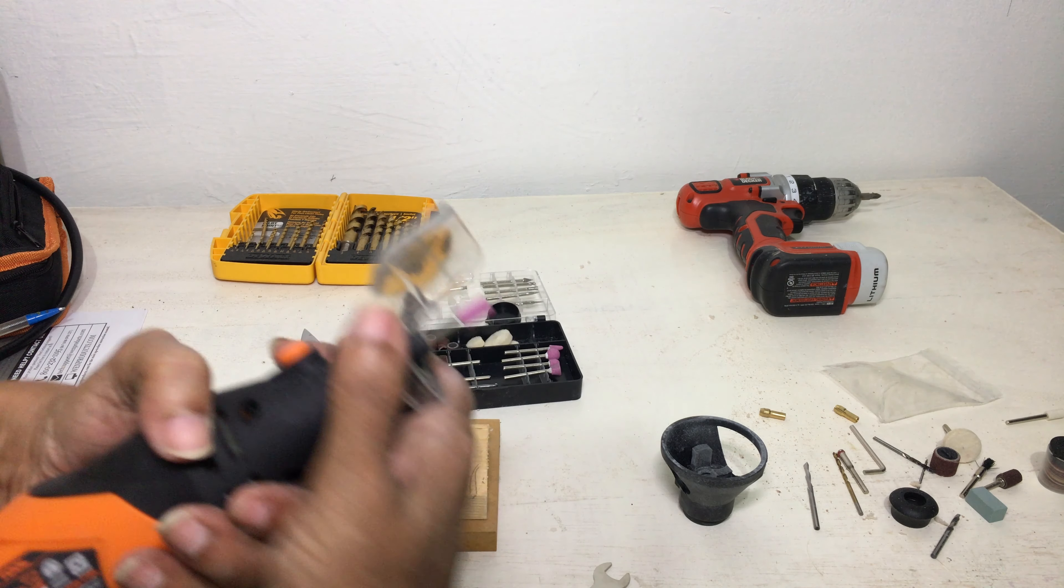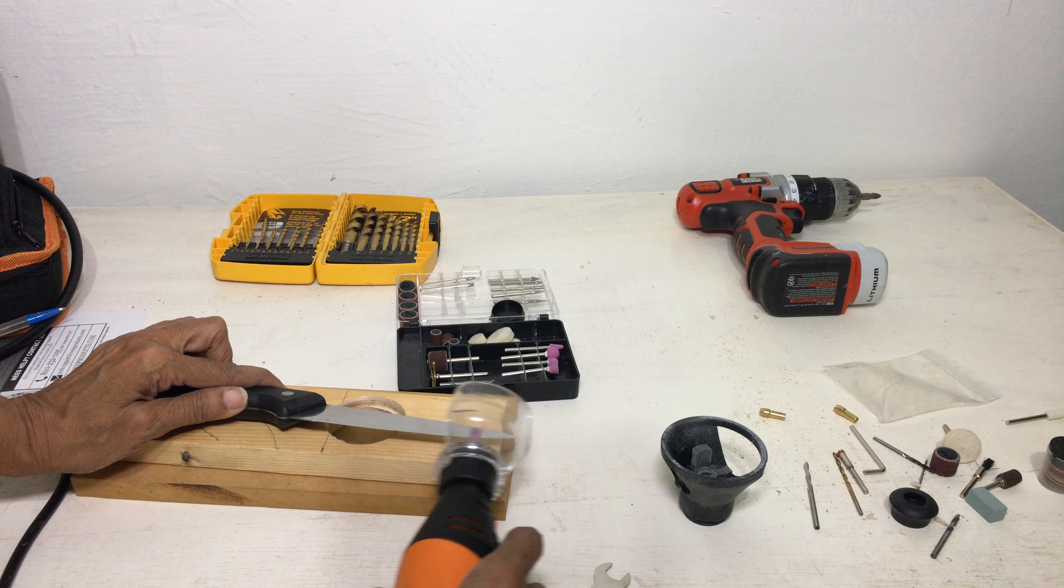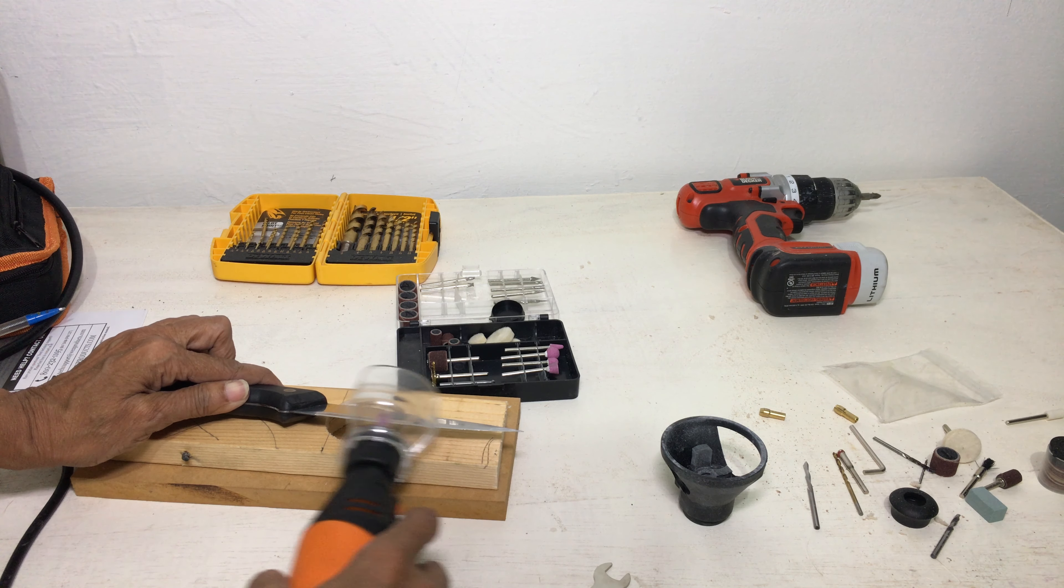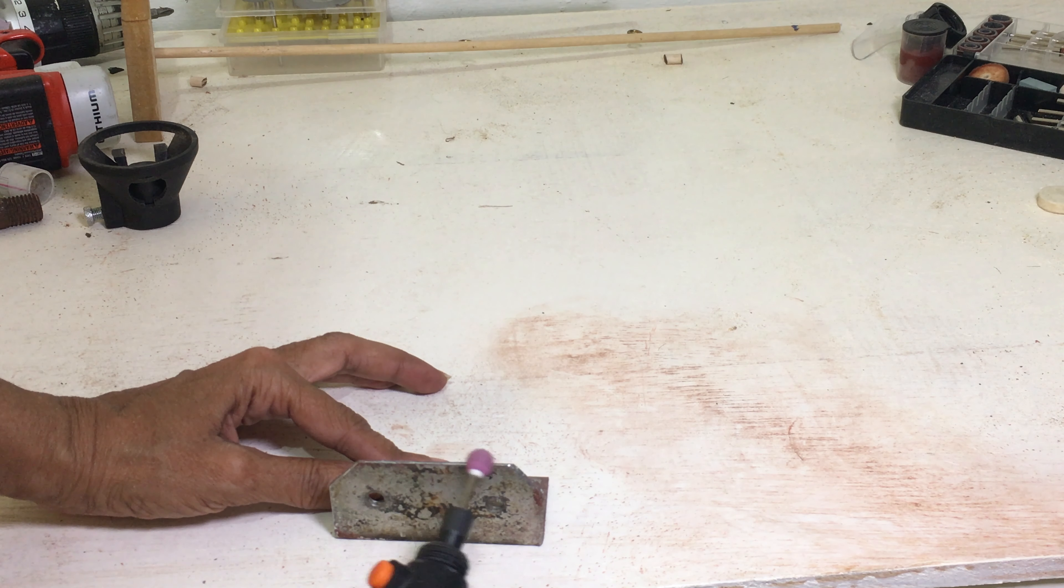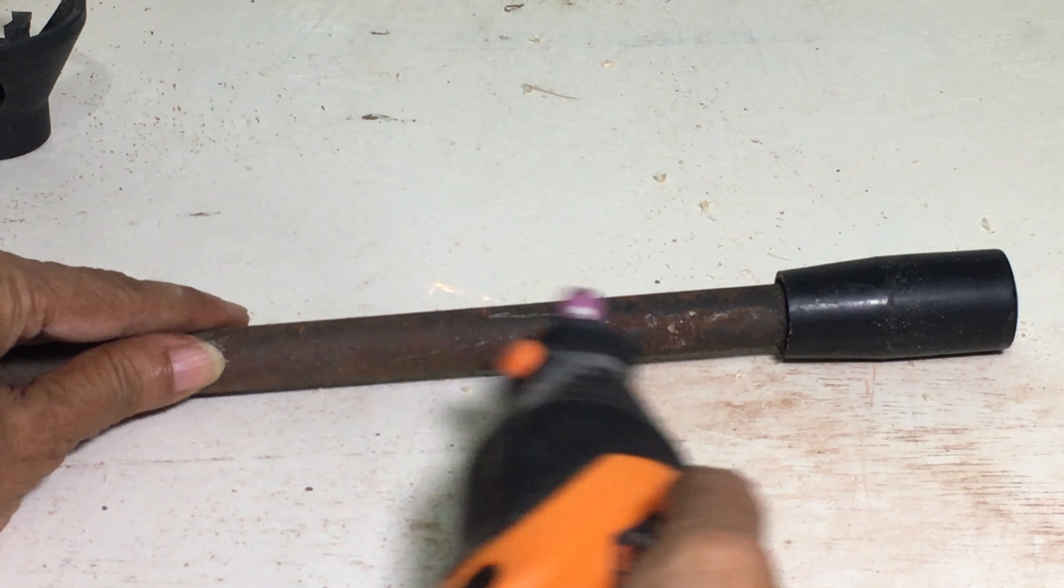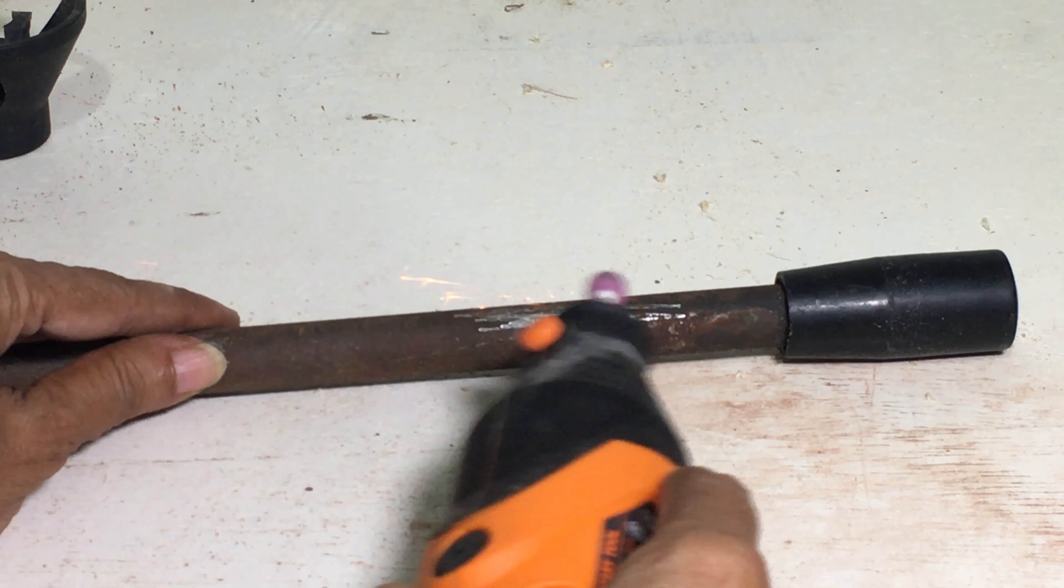The grinding stone can be used to sharpen knives, deburr metal, remove rust, smooth welded joints and grind off rivets.